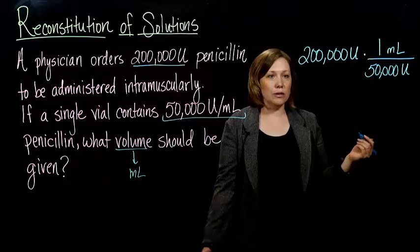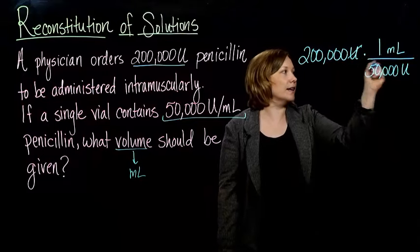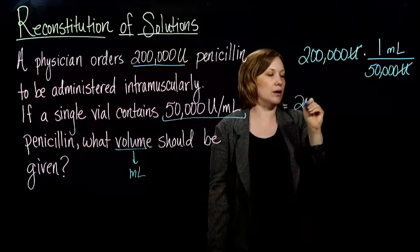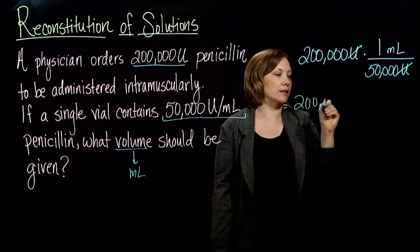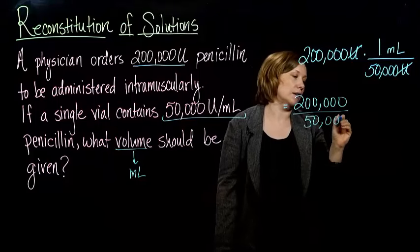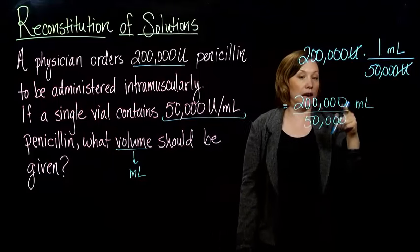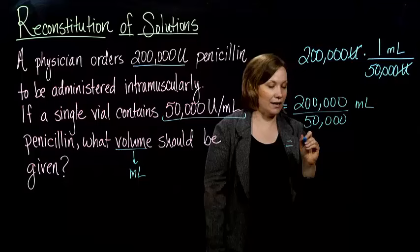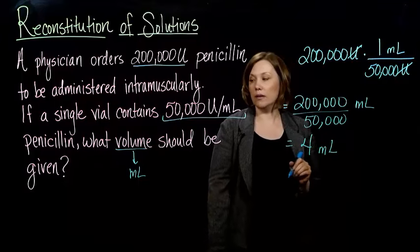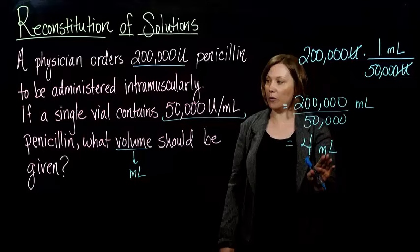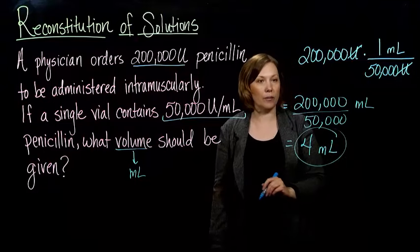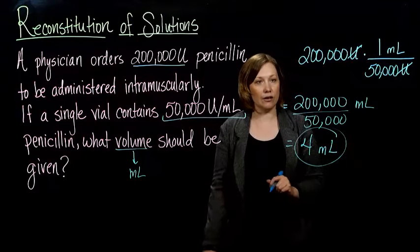Now all I have to do is have a canceling party. I cancel out the units and I end up with 200,000 divided by 50,000. When I reduce this fraction, I end up with just four. So the volume you need is four milliliters. And that's all there is to it.